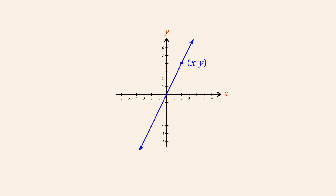This graph visually shows how each domain value corresponding to a point on the x-axis maps to a specific range value corresponding to a point on the y-axis. Since each domain value must map to exactly one range value, this limits the shape of the function's graph in certain ways.